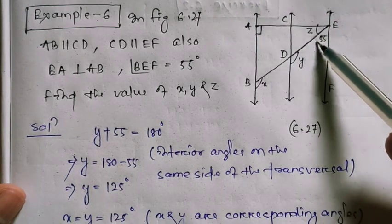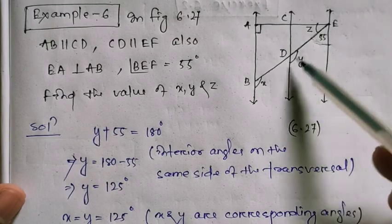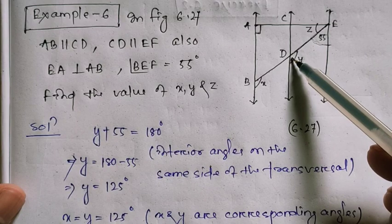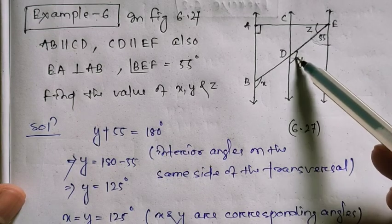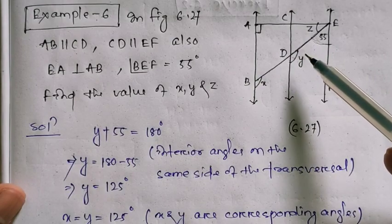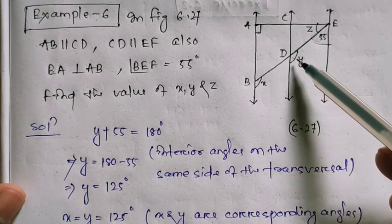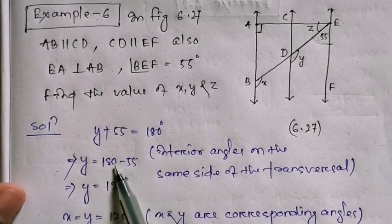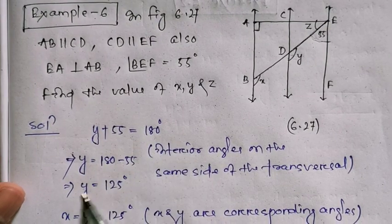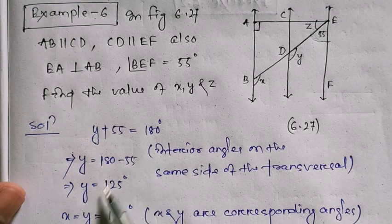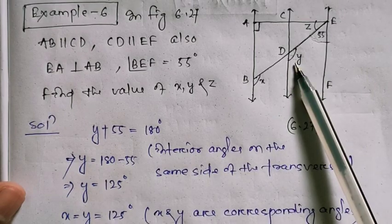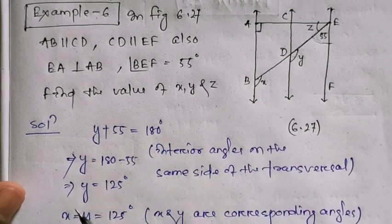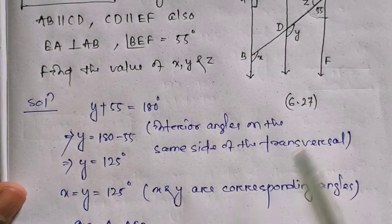Since CD is parallel to EF and these angles are on the same side of the transversal, we have 55 plus Y equals 180, so Y equals 125 degrees. Since AB is parallel to CD, X equals Y because these are corresponding angles. Therefore X equals 125 degrees.